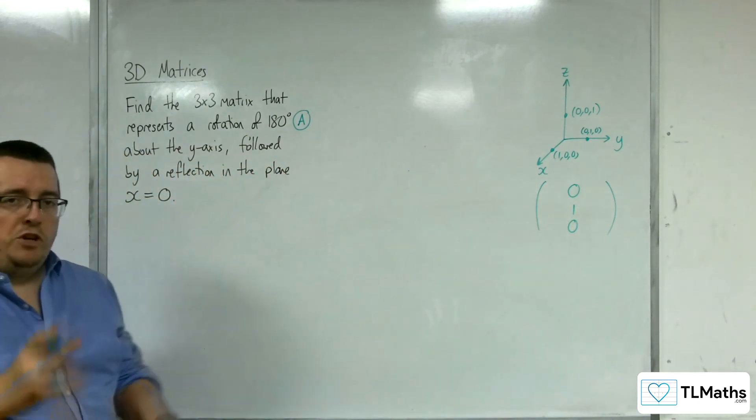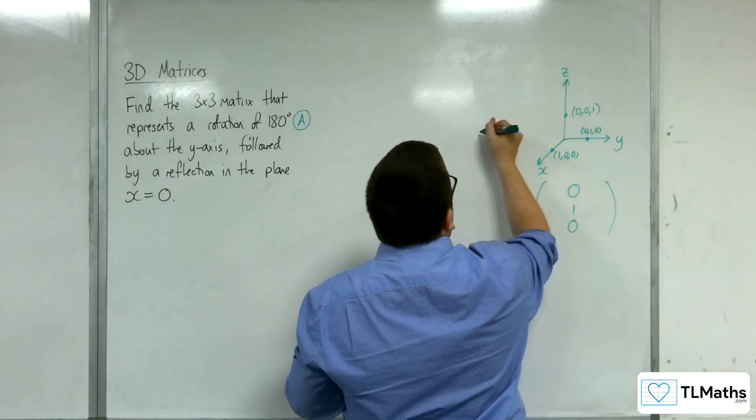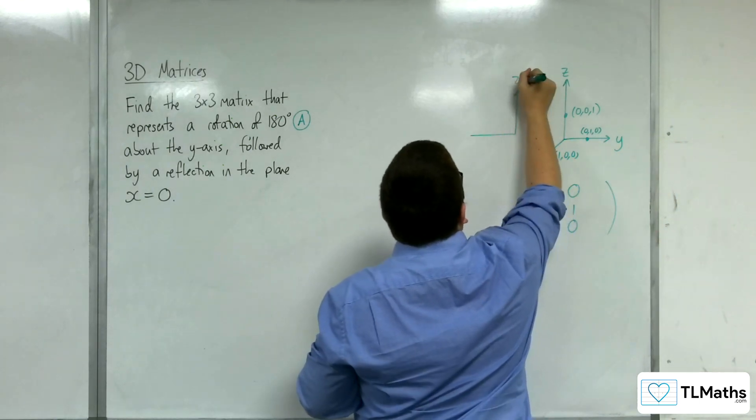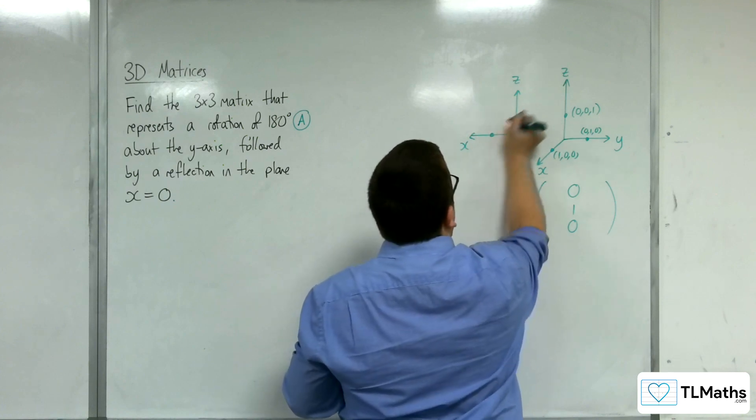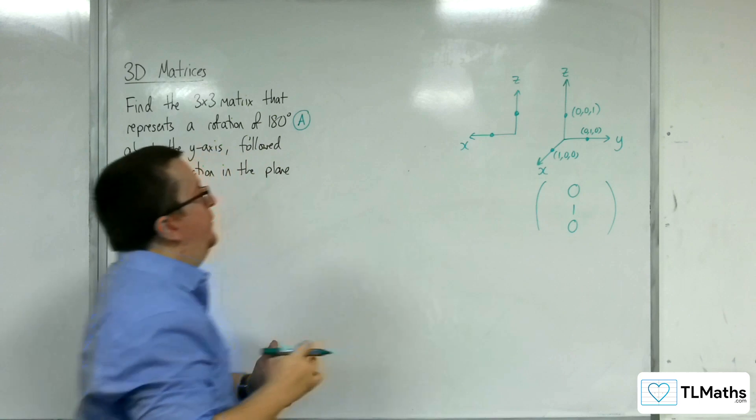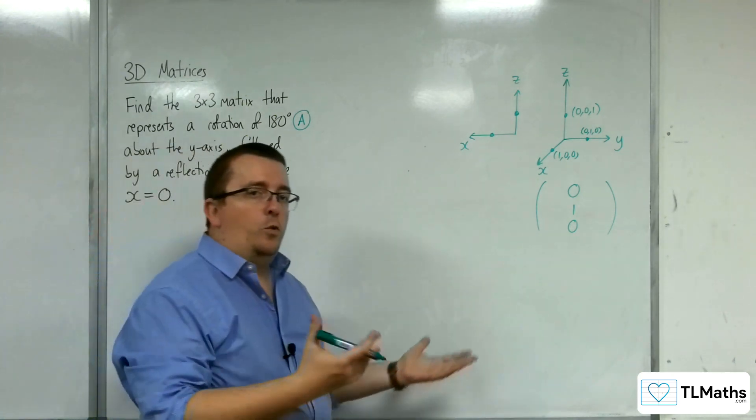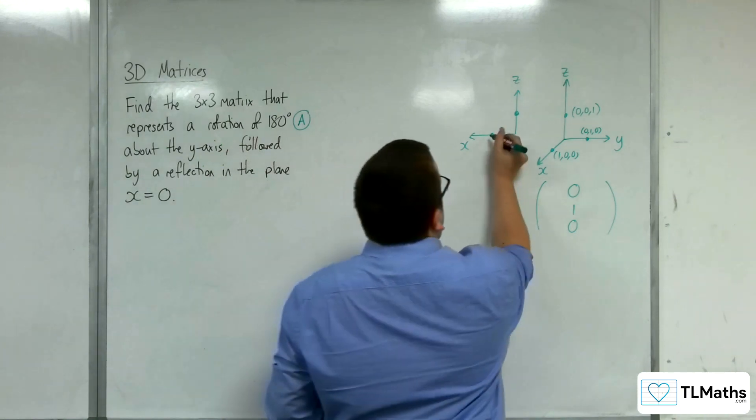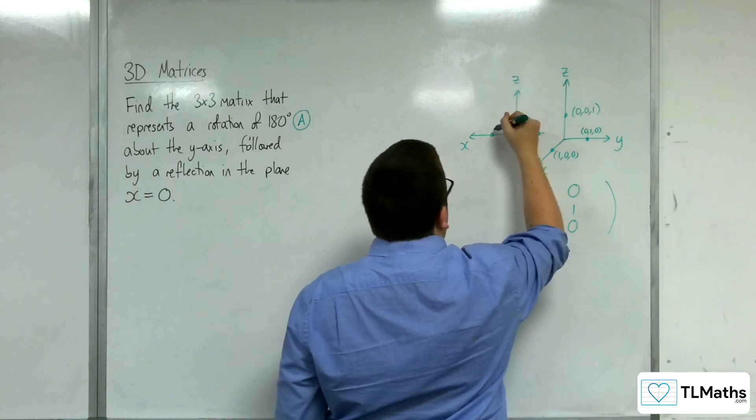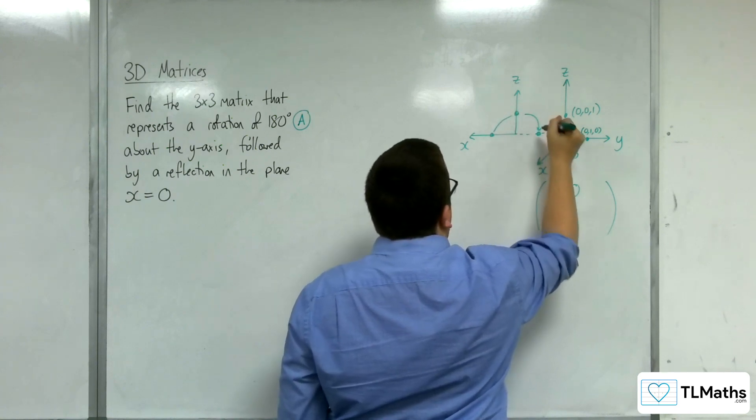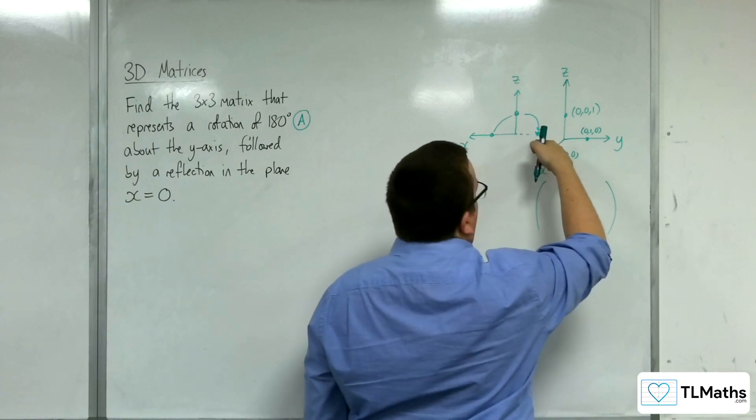Now, if I'm just looking down the y-axis and all I see is z and x in those directions. Okay. Here are my two points. If I'm going to rotate this by 180 degrees, it doesn't matter if I'm doing it anti-clockwise or clockwise. 1, 0, 0 will be mapped round here. Okay, to that point. So, 1, 0, 0 will go to minus 1, 0, 0.